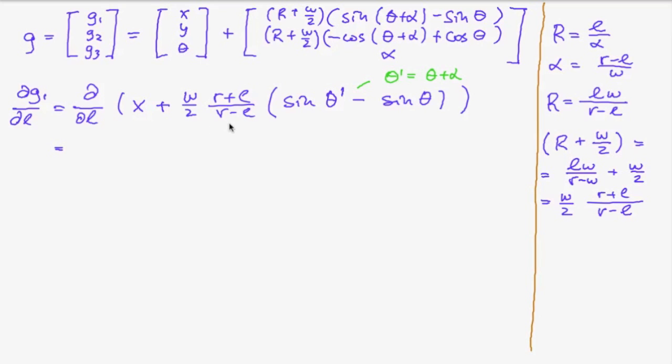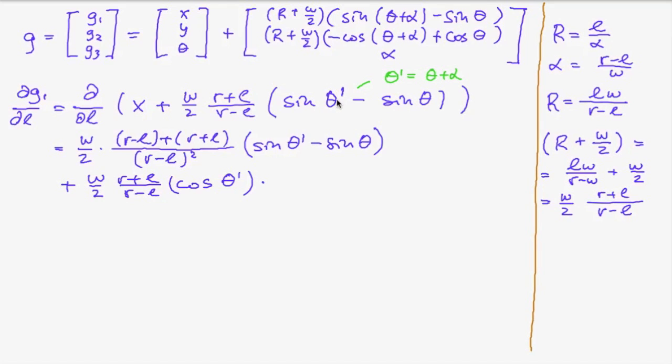So the derivative of the first factor is 1 divided by the denominator squared times r minus l plus r plus l times this part unmodified plus the first part unmodified times the derivative of the second part which is the cosine times the derivative of theta prime with respect to l. So this is the derivative of alpha with respect to l which is minus 1 divided by w.